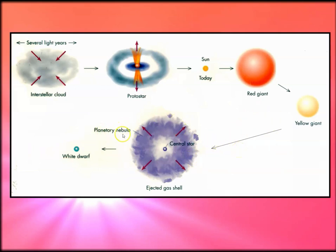The planetary nebula got its name because early astronomers thought they were seeing the beginnings of planet formation. Remember, most things in the cosmos began in nebulae. Planets aren't actually formed in a planetary nebula — what astronomers were seeing and didn't realize was actually a white dwarf.